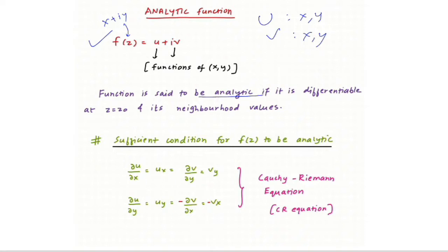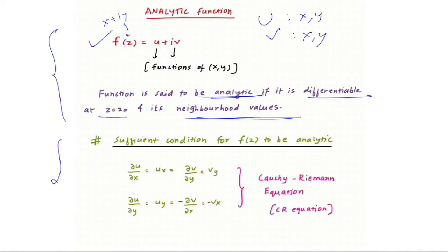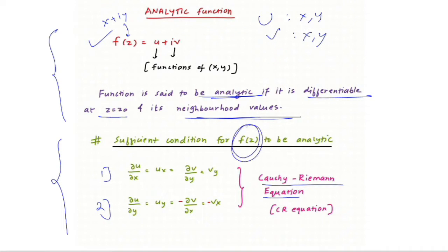The next point: your function is said to be analytic if it is differentiable at z = z₀ and its neighboring values. That was the conceptual method, but if you want the mechanical method — which you use in the examination to solve problems — you should use the Cauchy-Riemann (CR) equations. The CR equations have two parts. If both parts are satisfied, the function f(z) is analytic. If either step one or step two fails, it is not analytic.